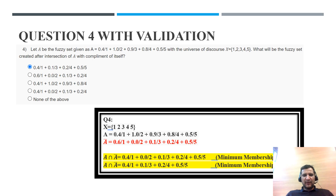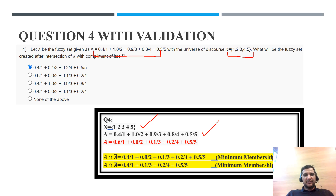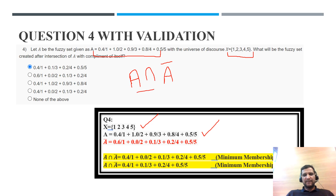The universe of discourse X equals {1, 2, 3, 4, 5}. The fuzzy set A is given. The question asks: what will be the fuzzy set created after the intersection of A with its complement? The universe of discourse is X, and the fuzzy set A and its complement are defined — for the complement we subtract each membership value from 1.